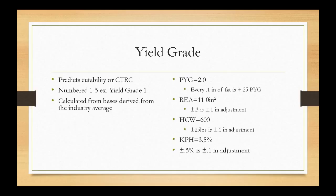Now moving on to ribeye area, or REA. The basis for that is 11 square inches. More muscle is good, so if a carcass has above 11 inches we're going to subtract from the yield grade, and if it has below 11 inches we're going to add — because we want to get that yield grade as low as we can. A carcass with an 11.3-inch ribeye would have a minus 0.1 adjustment; an 11.6-inch ribeye would have a minus 0.2 adjustment.